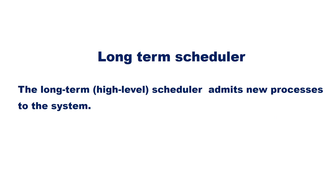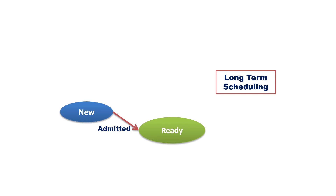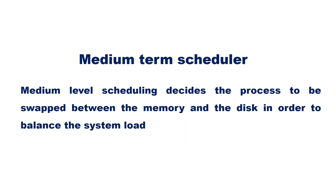The long-term scheduler admits new processes to the system — that means the long-term scheduler decides which new process should be moved to the ready state. Medium-level scheduling decides the processes to be swapped between the memory and the disk in order to balance the system load.